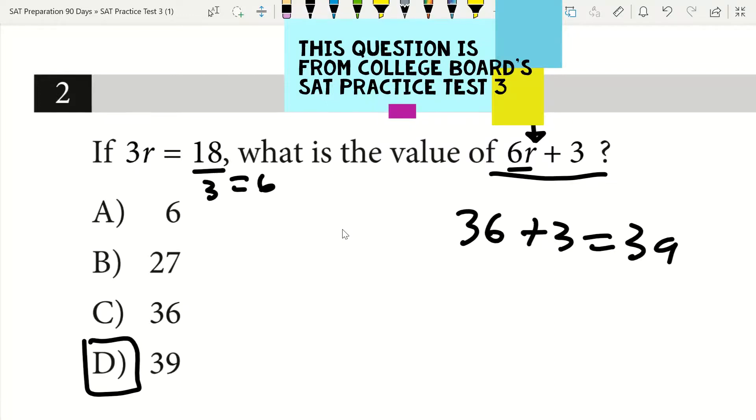Versus if I just recognize that if 3R equals 18, then 6R has to equal double 18, since 3R times 2 is 6R. 18 times 2 is 36, 36 plus 3, that must be 39, okay?